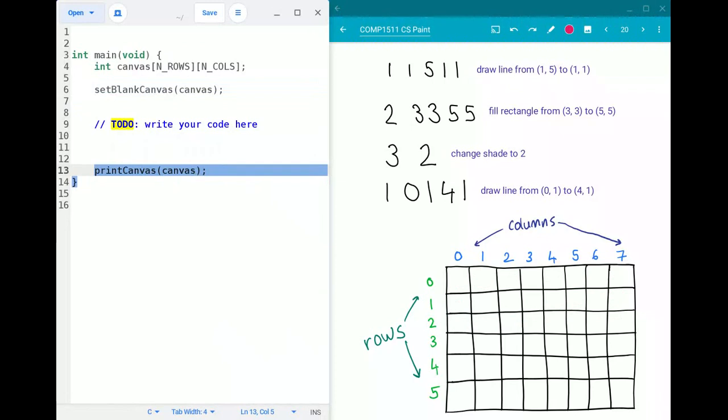Then at the very end we've got this print canvas line which will print out your canvas so print out the final state of your canvas. And in the middle we've got this todo saying write your code here. So I know it can be a bit overwhelming to look at this and just see you know todo write your code here solve the entire assignment in the spot not really knowing what you should do.